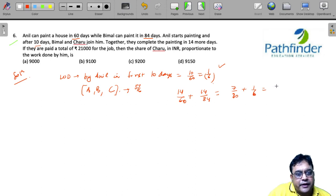So, that becomes 7 by 30 plus 1 by 6. So, that is 12 by 30 or 2 by 5. So, 2 by 5 of the work is done in 14 days by Anil and Bimal.